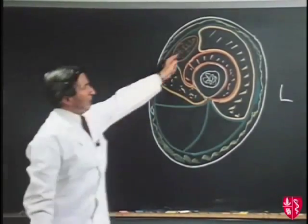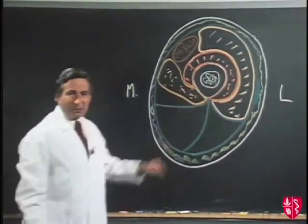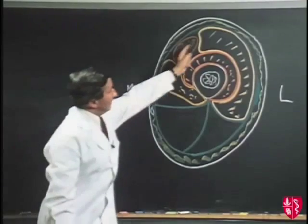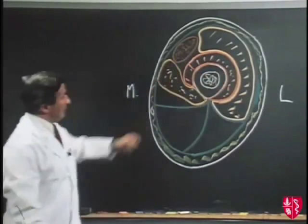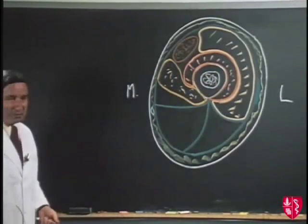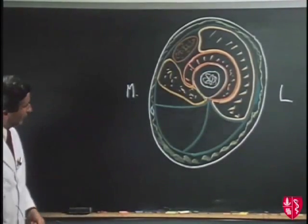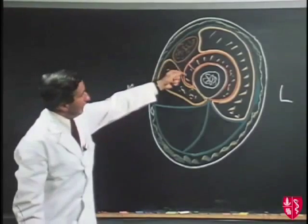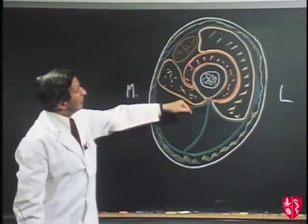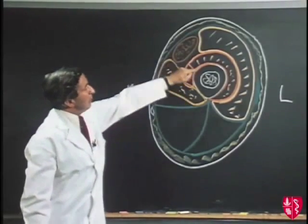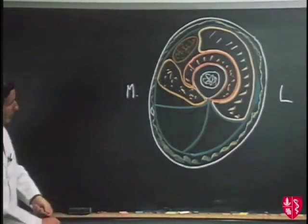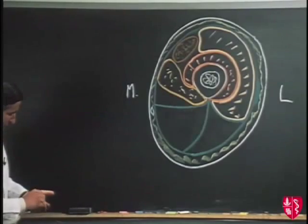Now what is the nerve supply to all these muscles present in this anterior compartment? It is the femoral nerve. The femoral nerve has come down from behind the inguinal ligament and quickly supplied these muscles.